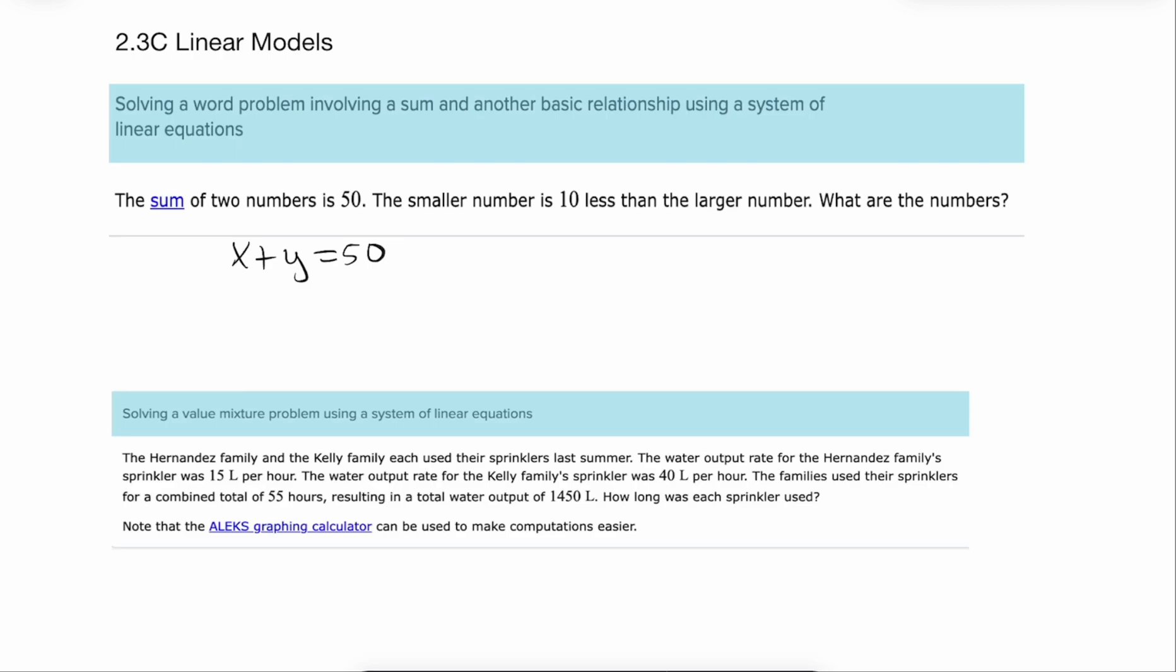And then it says that the smaller number, we'll just call it x, is 10 less than the larger. So x is the larger minus 10. Ten less than means that if we take away 10 we would get the smaller number. Now this lends itself towards substitution. Now you don't have to do substitution. I just think substitution is a good way to go.